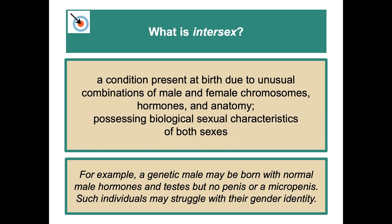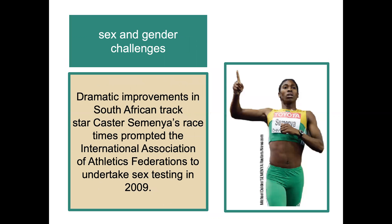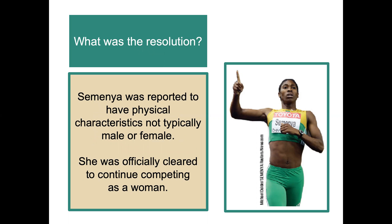Intersex is a condition present at birth due to unusual combinations of male and female chromosomes, hormones, and anatomy — possessing biological sexual characteristics of both sexes. For example, a genetic male may be born with normal male hormones and testes but no penis. Such individuals are likely to struggle with gender identity and face other challenges. A notable example is South African track star Caster Semenya, whose dramatic athletic improvements prompted the International Association of Athletics to undertake sex testing in 2009. It was reported that she had physical characteristics not typically male or female, and she was officially cleared to continue competing as a woman.